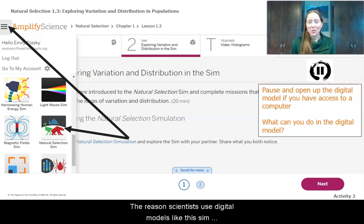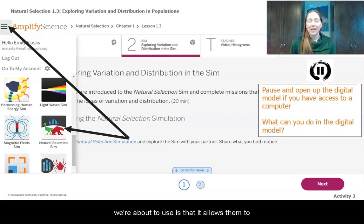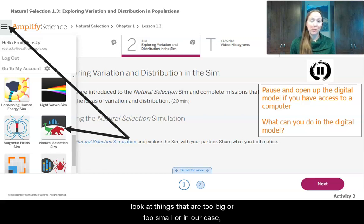The reason scientists use digital models like the sim we're about to use is that it allows them to look at things that are too big or too small or in our case take a really long time. We want to look at populations and how they change. It takes hundreds and thousands and millions of years for populations to change, but we can see changes in a very short amount of time in the sim.